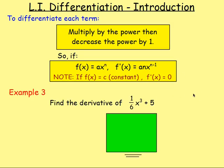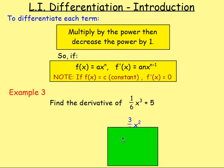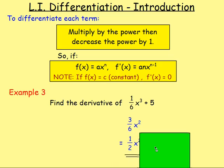Example 3: Find the derivative of (1/6)x³ + 5. Finding the derivative just means differentiate. Multiply by the power: (1/6) times 3 gives us 3/6. Then take 1 off the power, so x³ becomes x². The 5 is a constant, so it just goes to 0. Now 3/6 simplifies to 1/2, so the answer is (1/2)x².